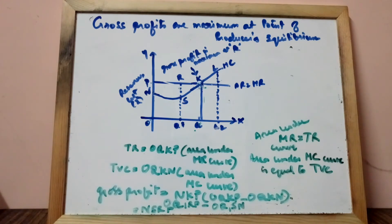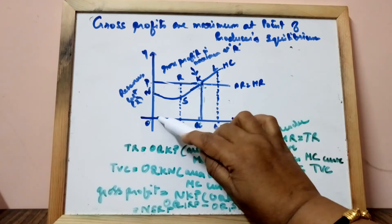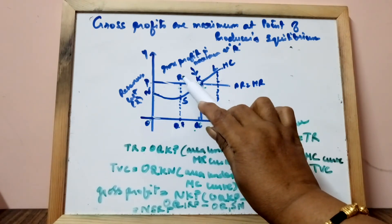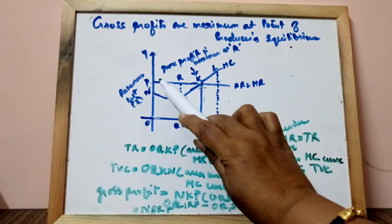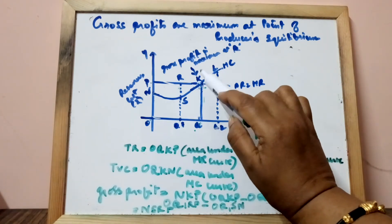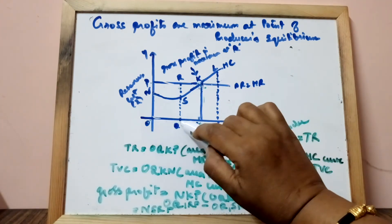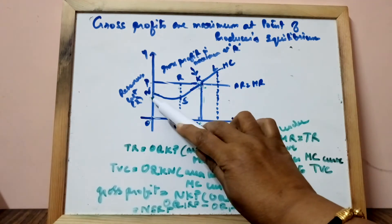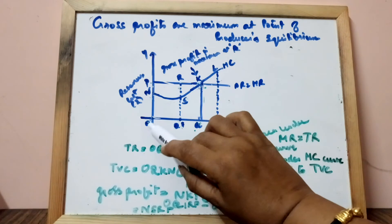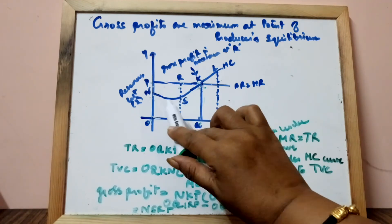At point R, TR is equal to OQ1RP, and TVC is OQ1RN. So TR minus TVC gives you the area NSRP. You are comparing NSRP and NKP — and NSRP is less than NKP.